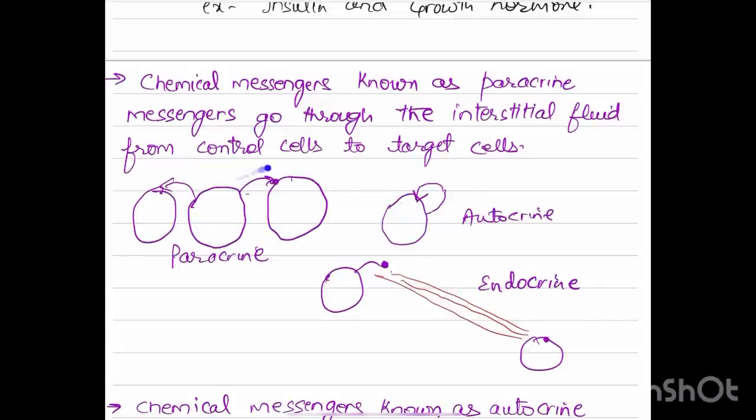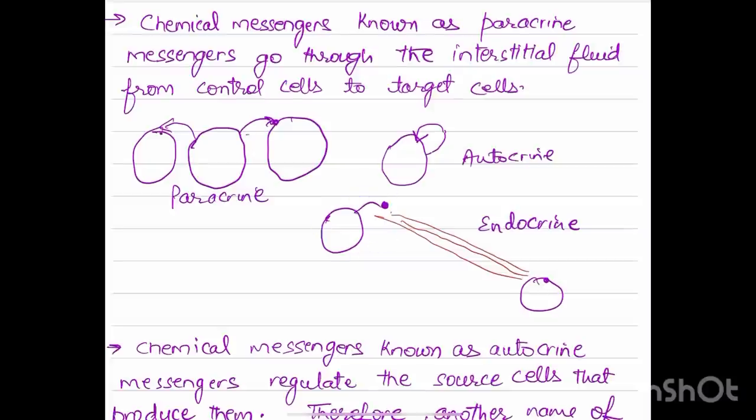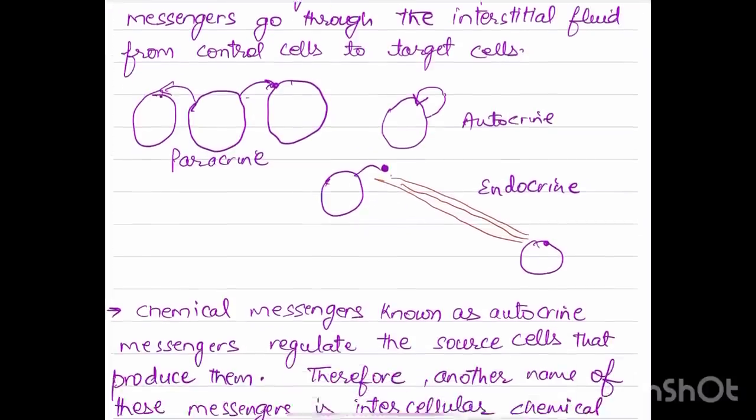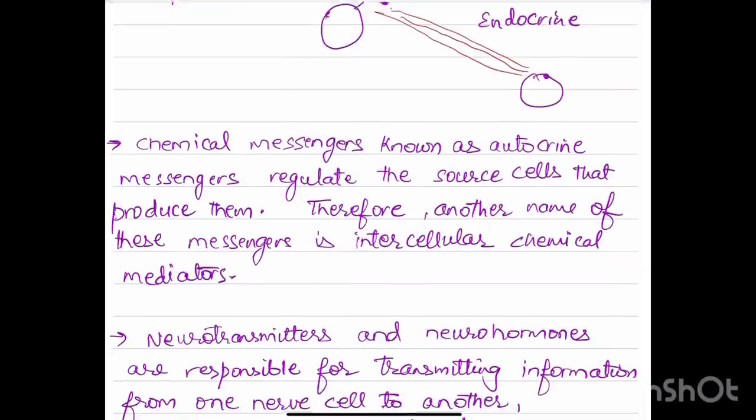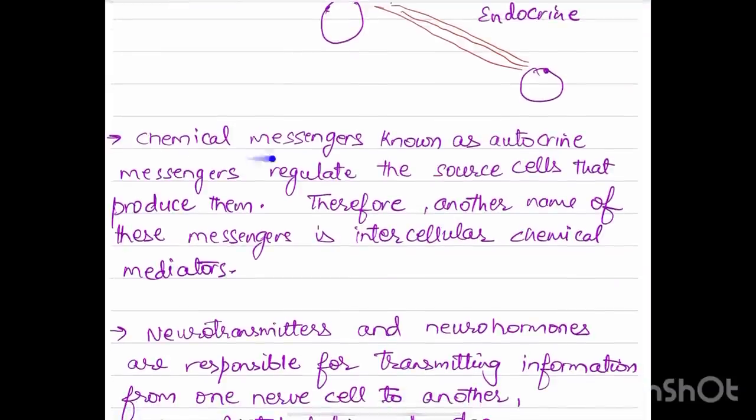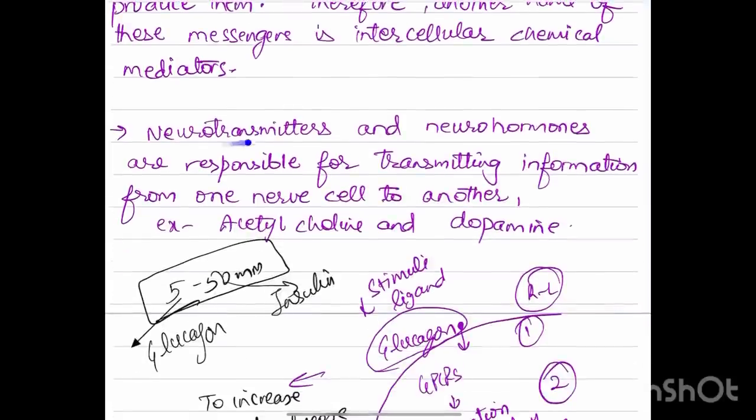The messengers known as autocrine regulate the source cells that produce them. They are produced on the same cells and act on the same cell. Therefore, another name of these messengers is intracellular chemical mediators. Neurotransmitters and neurohormones are responsible for transmitting information from one nerve cell to another.